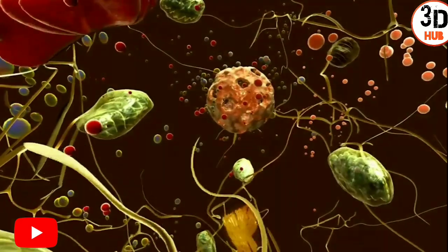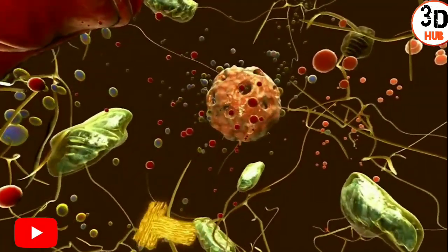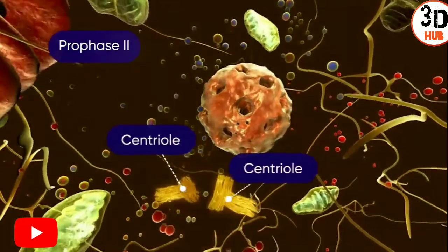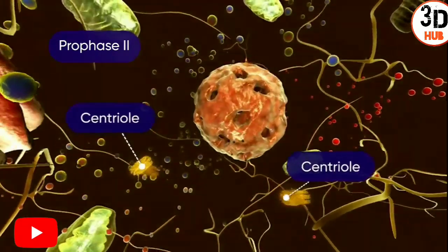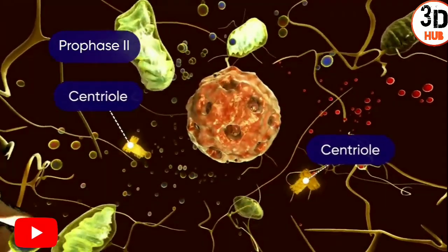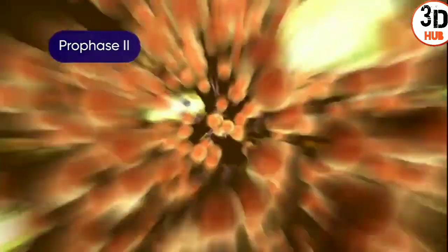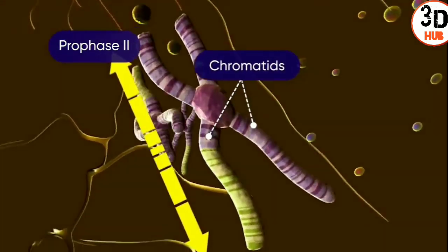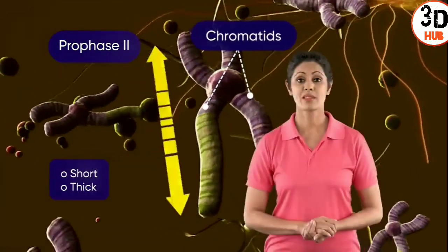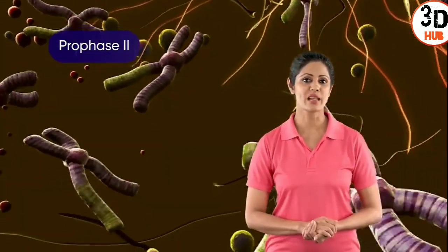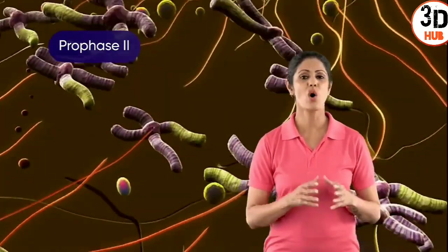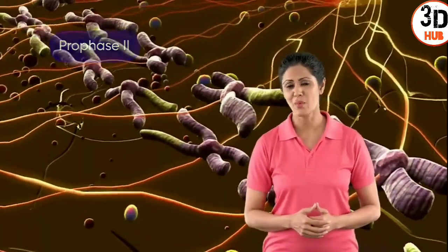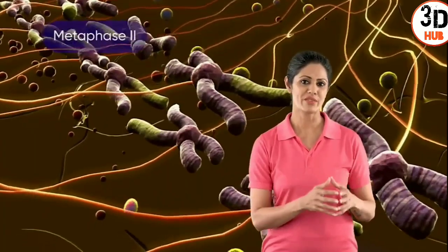During the first stage of meiosis 2, also called prophase 2, the centriole divides into two and each centriole slowly migrates to the opposite pole. Following this, the nuclear membrane disappears and chromosomes with two chromatids become short and thick. Subsequently, chromosomes get arranged on the equator of the spindle and the spindle attaches to them at the centromere, marking the beginning of metaphase 2.